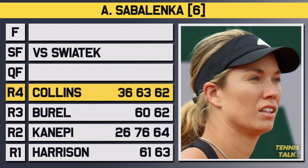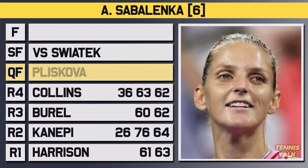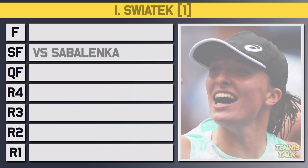In the quarterfinal stage, Sabalenka would take on the 22nd seed Pliskova, who she had played many times before, and after a very good first set, Sabalenka eventually prevailed in straights, 6-1, 7-6, to make it to another US Open semifinal.